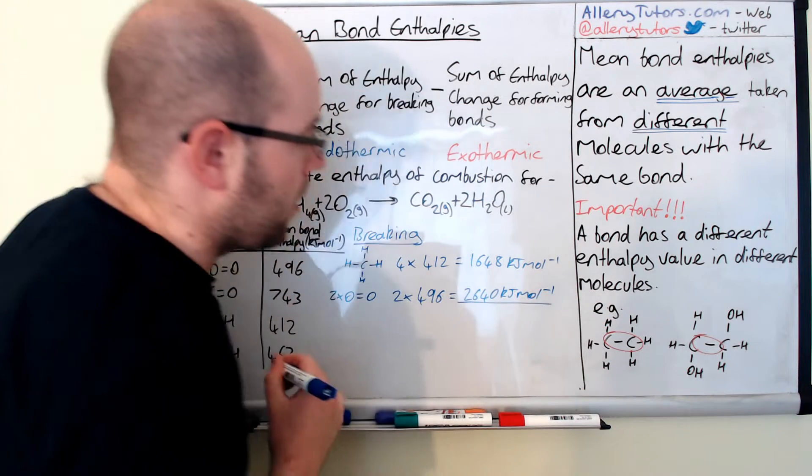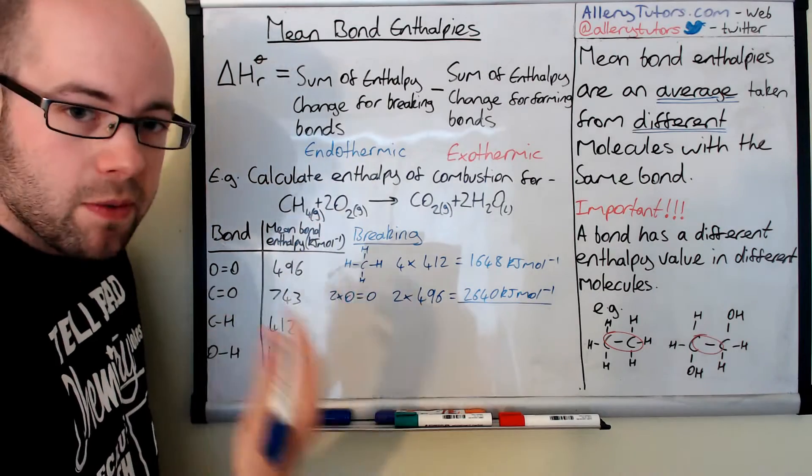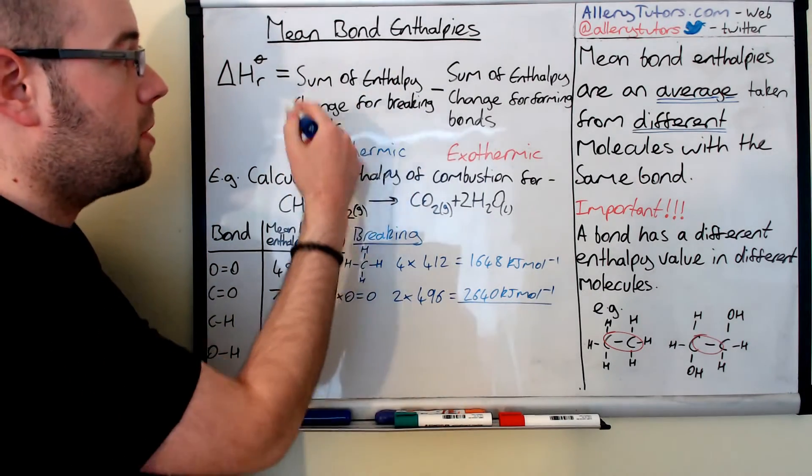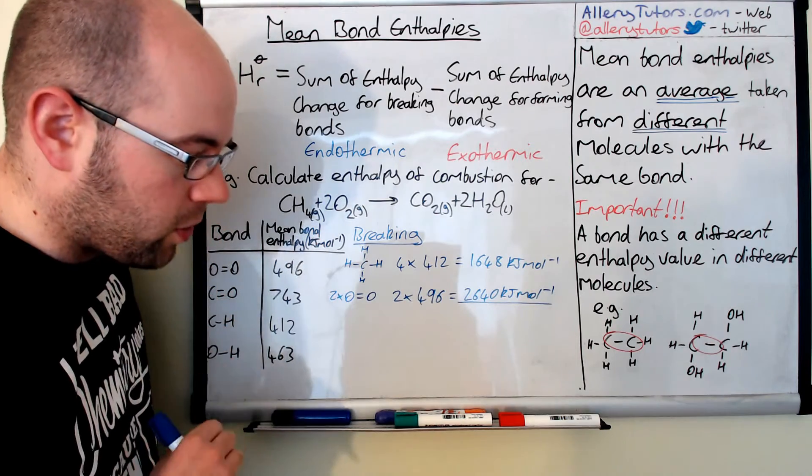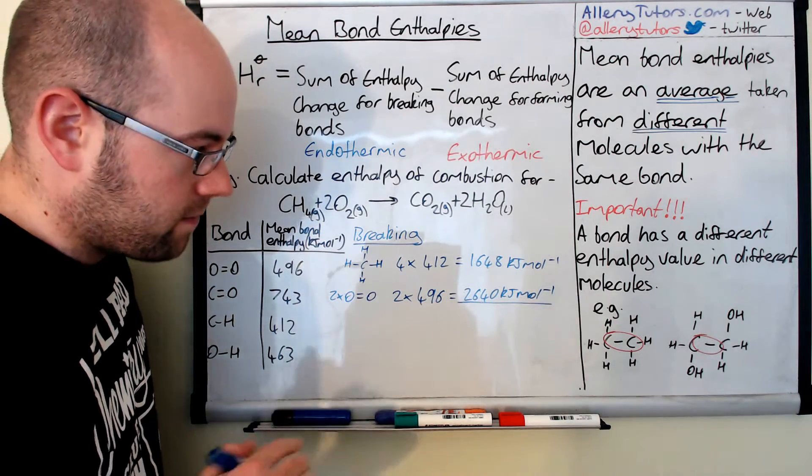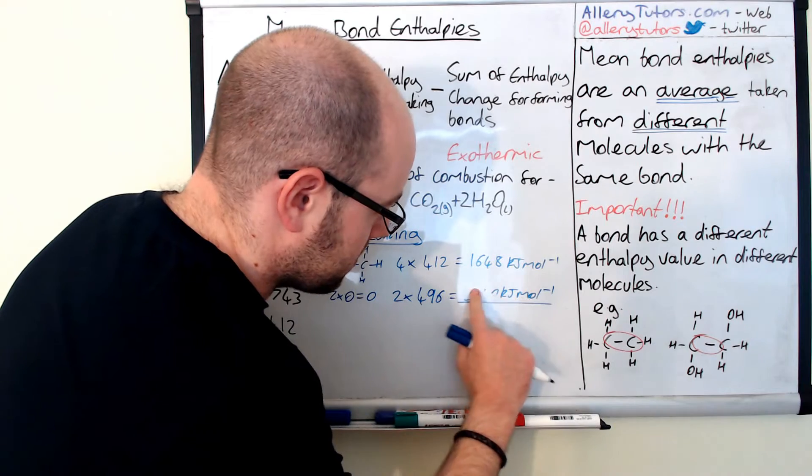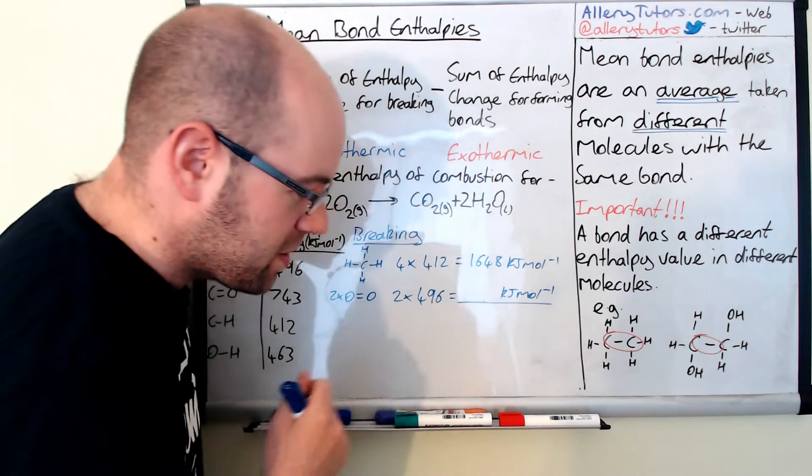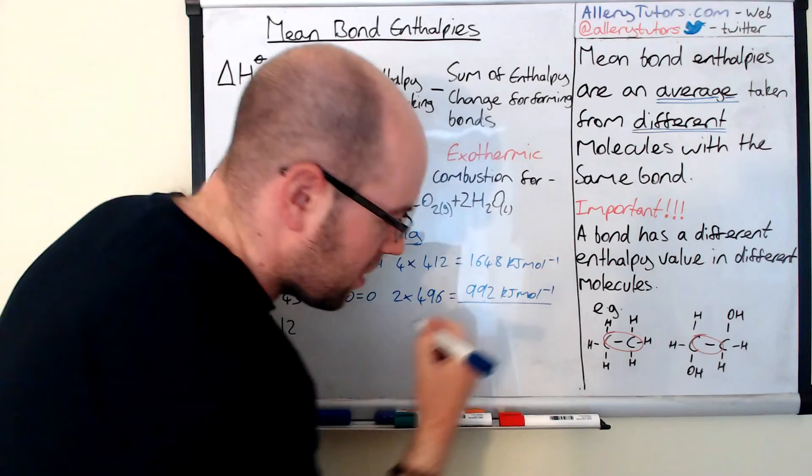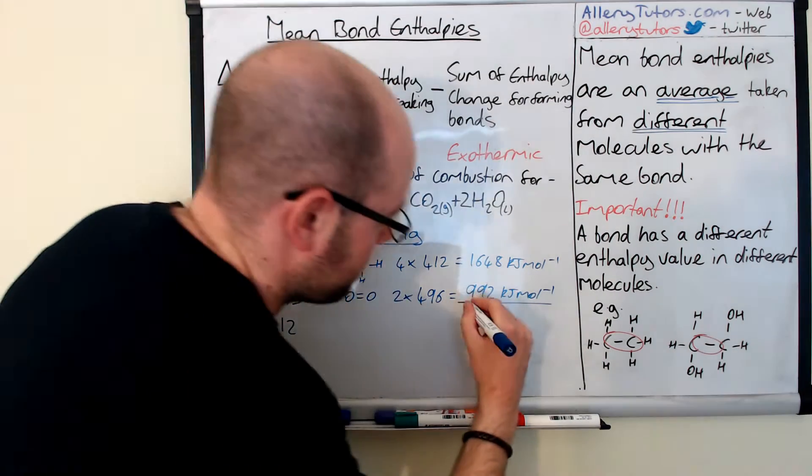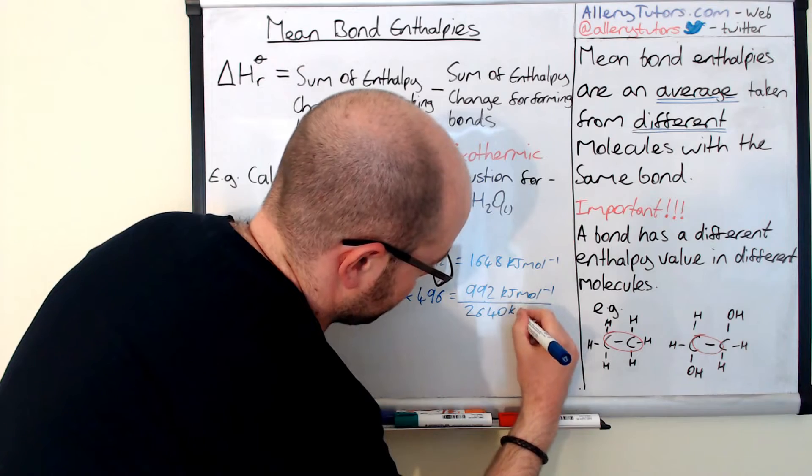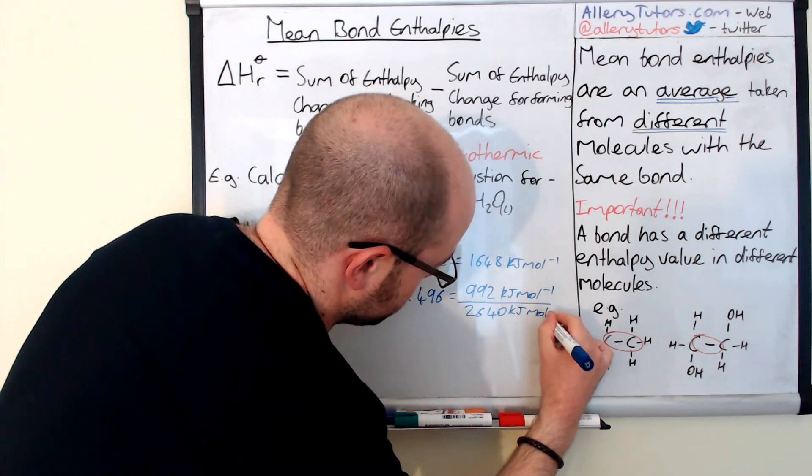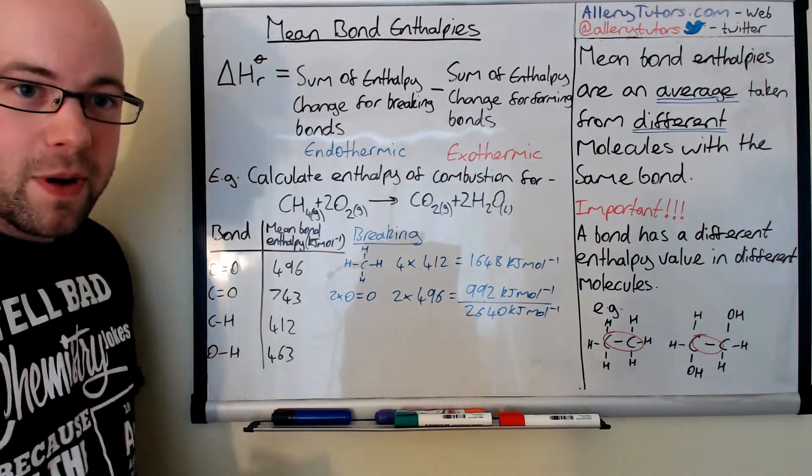Now that's all of our bonds that have been broken. So now we add them up and we find out our sum of the enthalpy change. So the sum of all of them is 2640. This one is 992 and the sum is 2640 kilojoules per mole. That's the sum of the enthalpy change for breaking bonds.